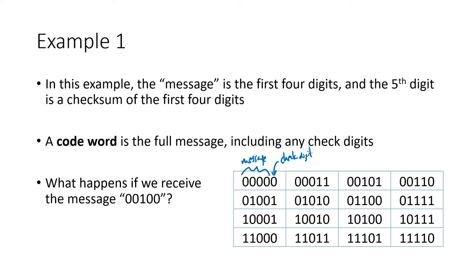A code word is the full message that includes any check digits. So we might say that we're going to send the message 00100, and we can detect that there's an error because if we look in our dictionary — the list of all valid code words — 00100 is not on that list. So we know something's wrong; that message has an error in it.